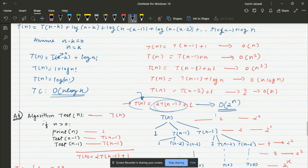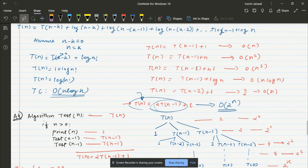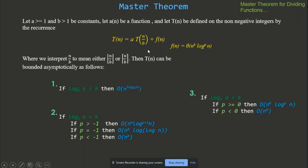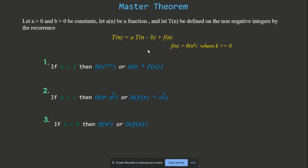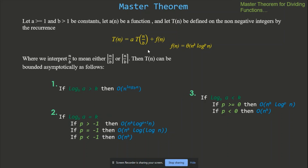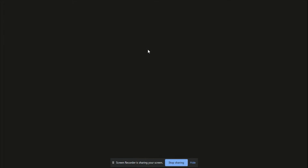So these are the four algorithms — all in the decreasing form of recursive functions. There is another form: the dividing form. For dividing recursive functions, it's better to use Master Theorem rather than recursion tree or substitution method. We'll discuss both the decreasing and dividing forms of Master Theorem in the next video, where we'll also analyze a few more algorithms.